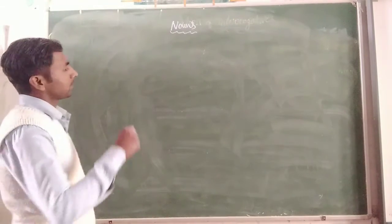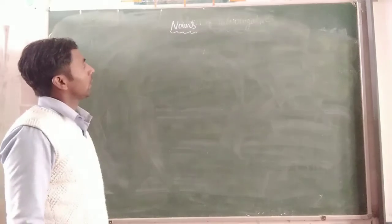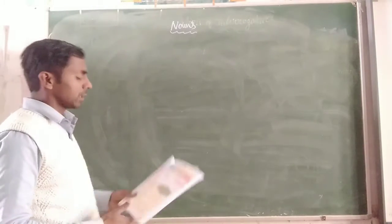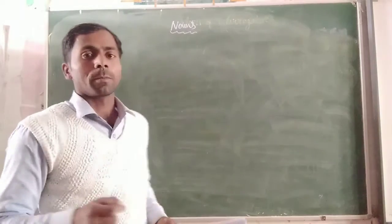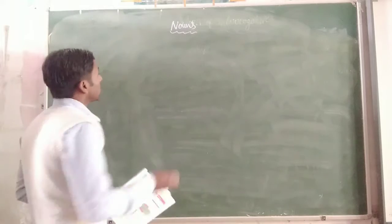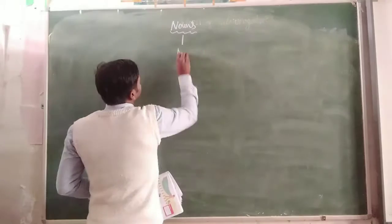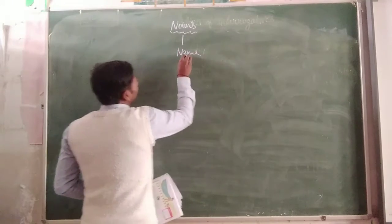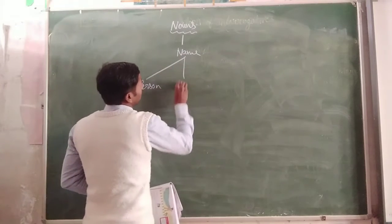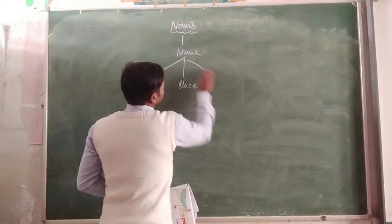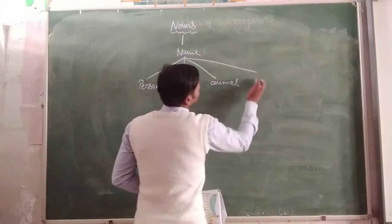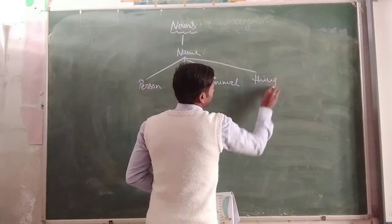If we define the noun, the definition is: a noun is the name of a person, place, animal, or thing.